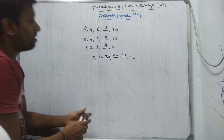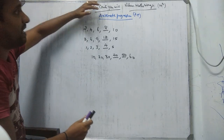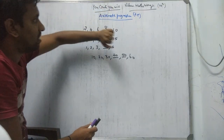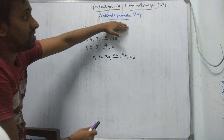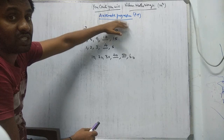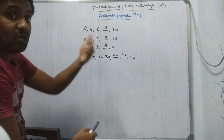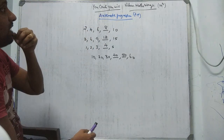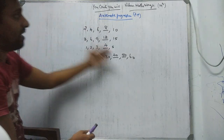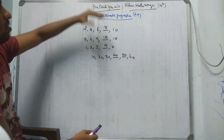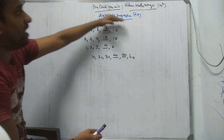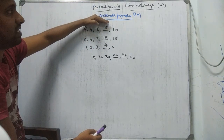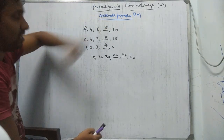So in the AP chapter, the main concept is arithmetic progression. Progression is a continuous process — continuous change. And arithmetic is based on number. So the change based on number is called arithmetic progression.